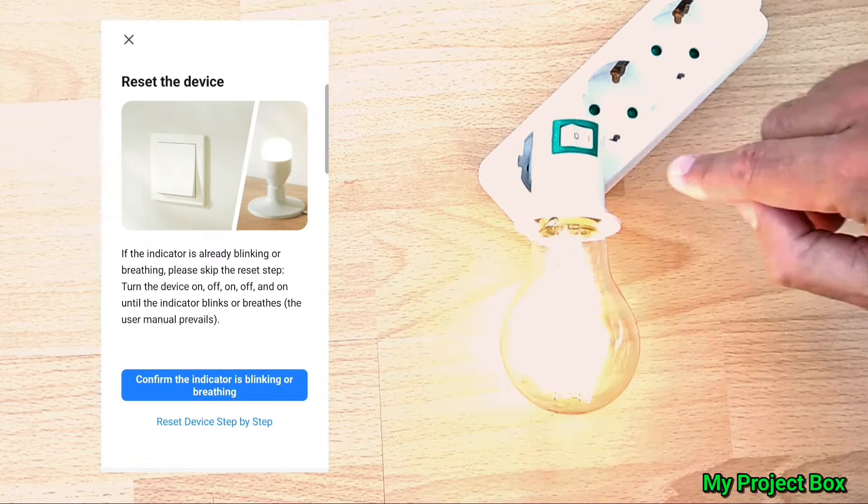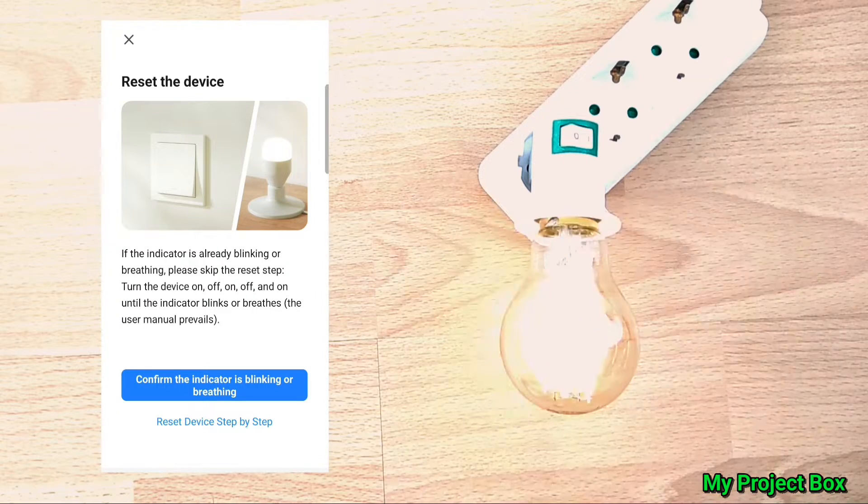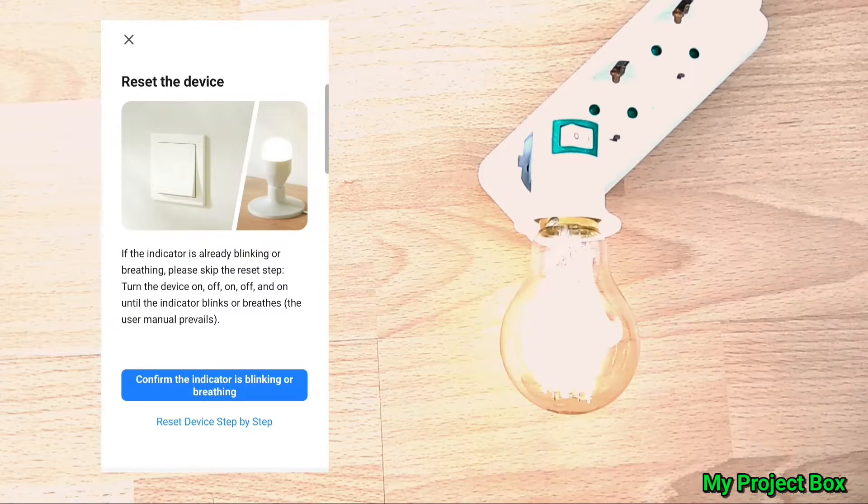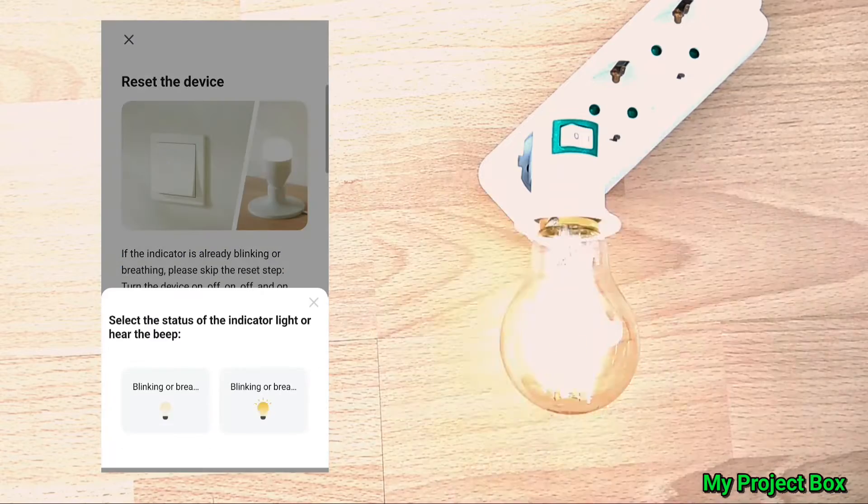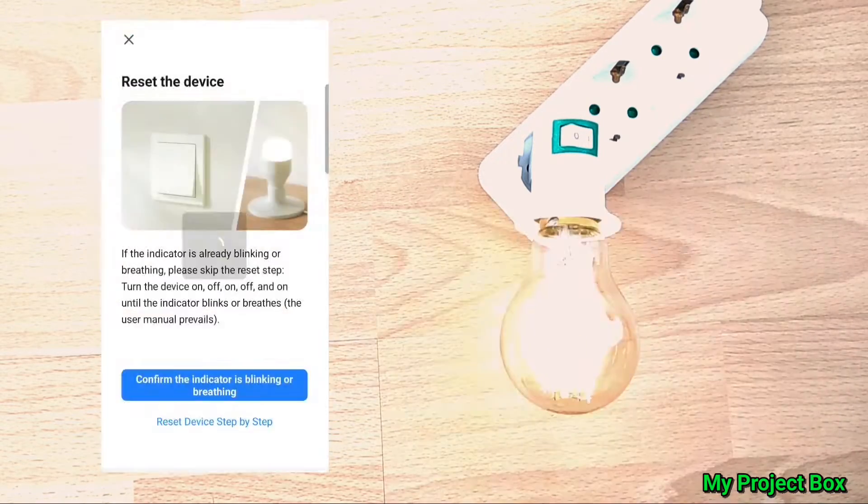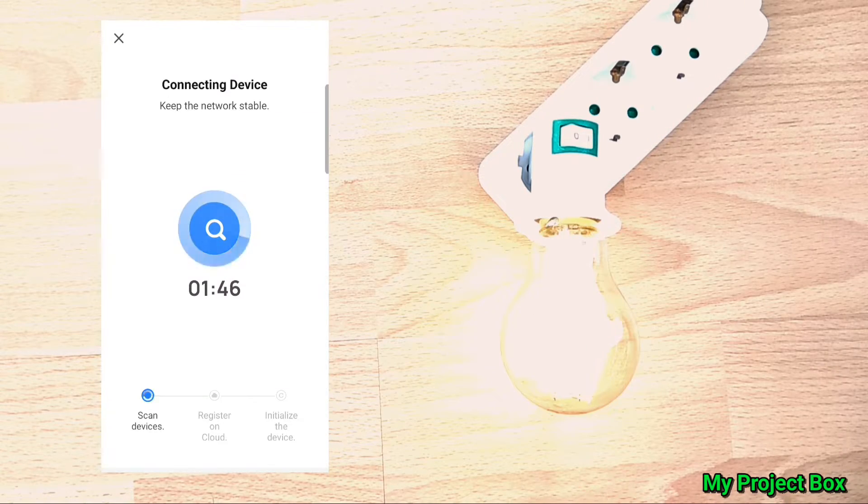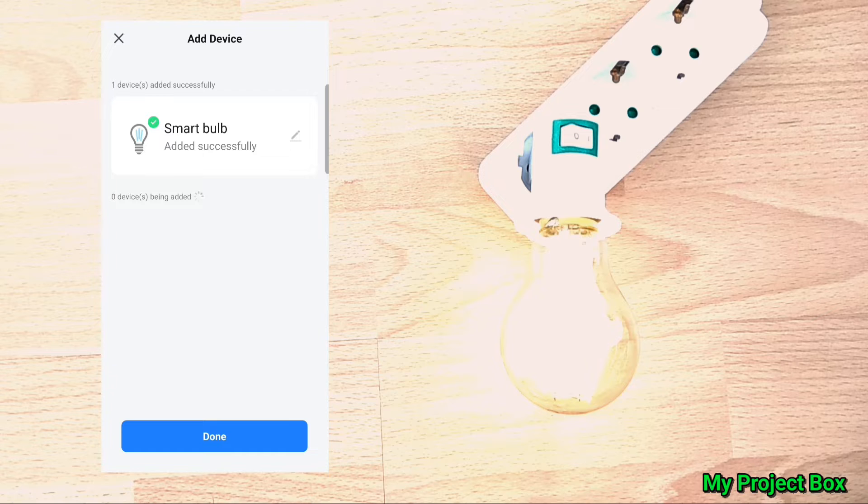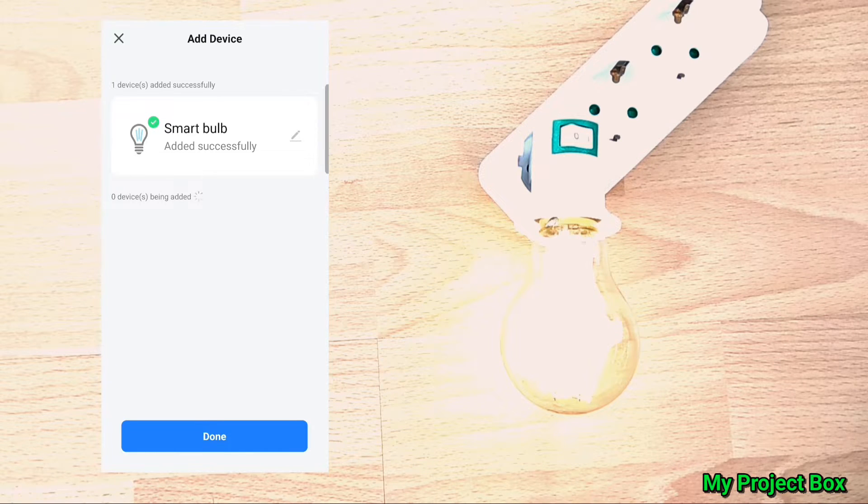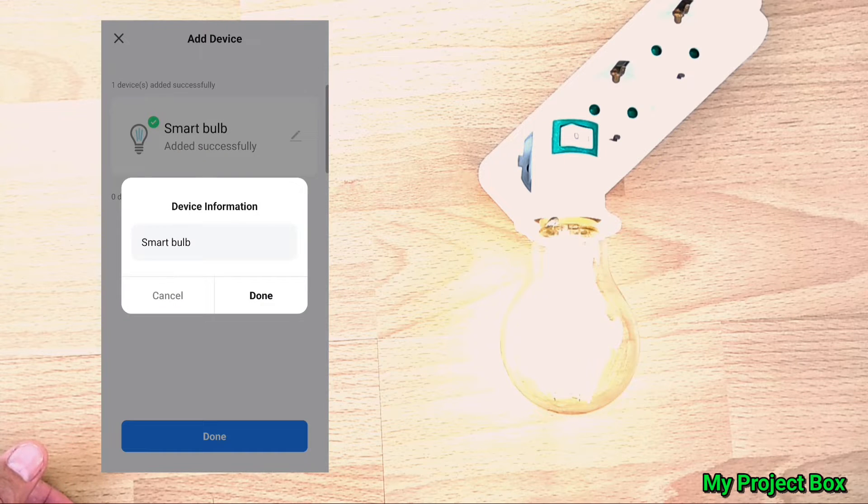Now we turn the bulb on to confirm that it goes into blinking mode. And it is blinking. So we confirm that it's blinking rapidly, so it's in the right mode. And there we go, it's found the bulb. So now we can give it a name. I would call it Filament Smart Bulb.